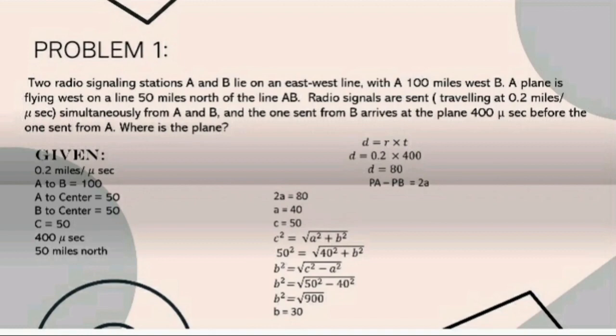We have the givens: 0.2 miles per microsecond, A to B equals 100, A to center equals 50, B to center equals 50, so C equals 50, 400 microseconds, and 50 miles north. We need to find the distance.